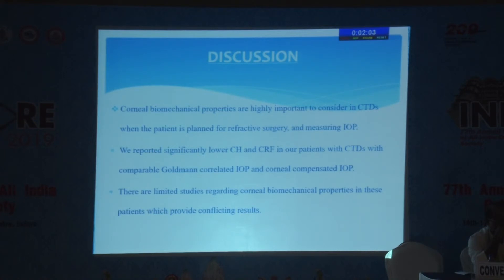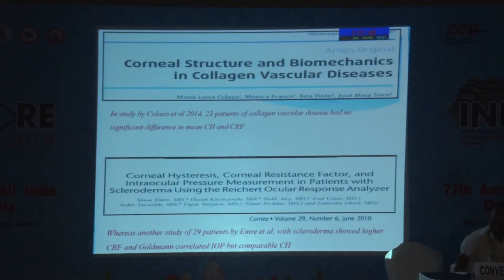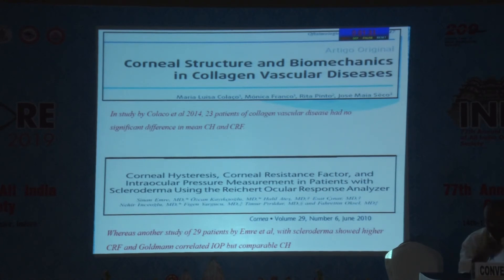These biomechanical properties are highly important to consider in connective tissue disorders when a patient is planned for refractive surgery or when measuring IOP. We reported significantly lower CH and CRF in patients with CTDs, with comparable Goldman correlated IOP and corneal compensated IOP. In the study by Coloco et al. (2014), 23 patients with collagen vascular disease showed no significant difference in mean CH and CRF, whereas a study of 29 patients by Emre et al. with scleroderma showed higher CRF and Goldman correlated IOP but comparable CH.